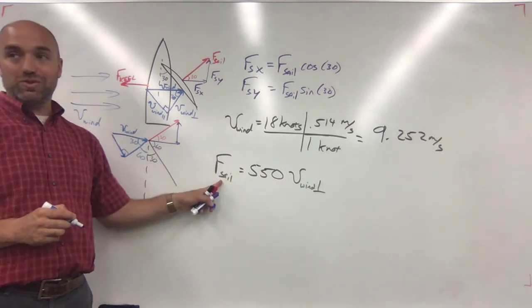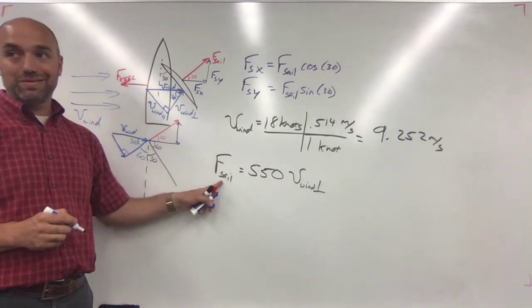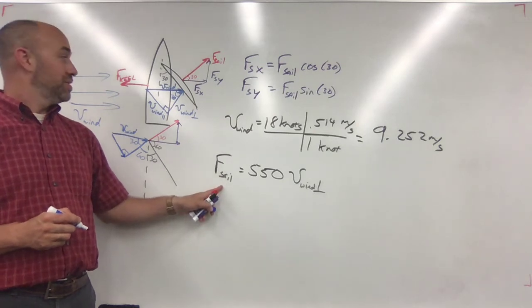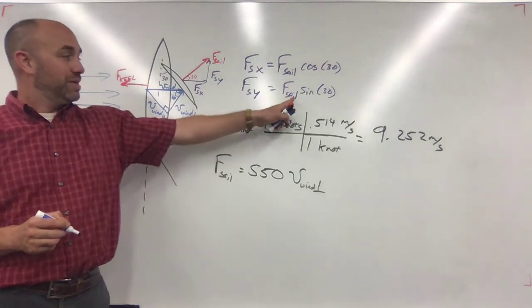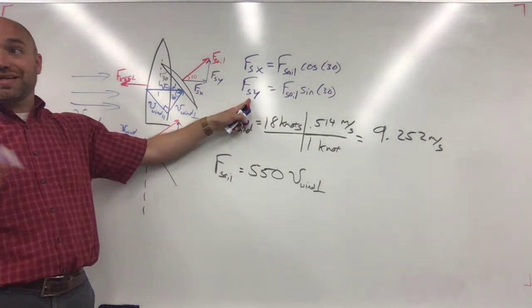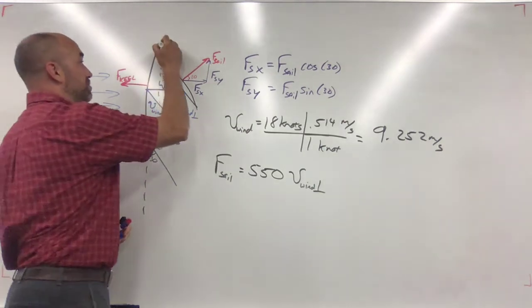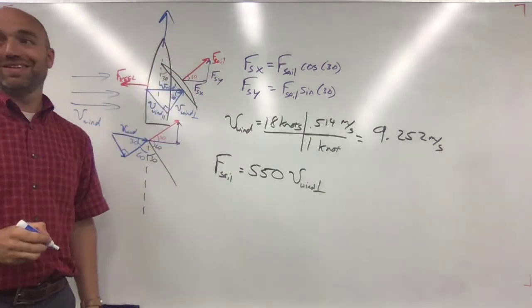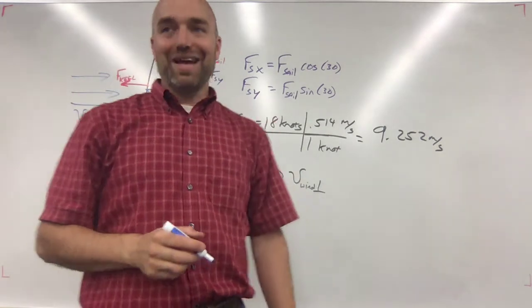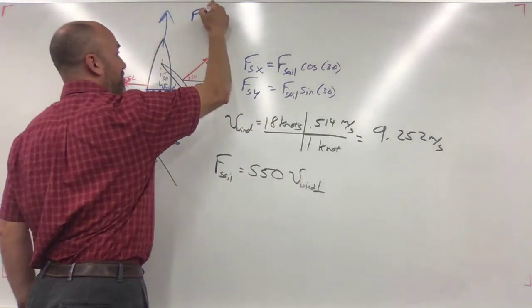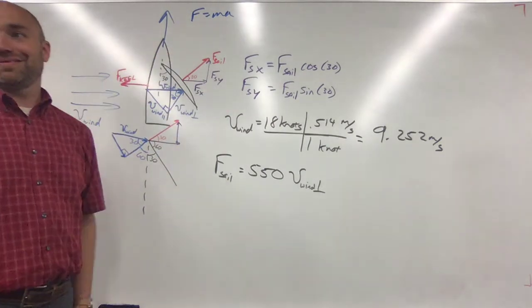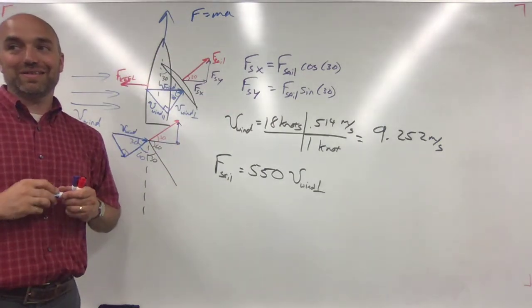Once you find the perpendicular component of wind, plug it into this equation to get the force of the sail. Once you get the force of the sail, plug that in here to get the force of the sail in the Y direction, because that's the force that makes the boat go forwards. Is that the initial acceleration? Yes, exactly. Then you can just use F equals ma to find acceleration.